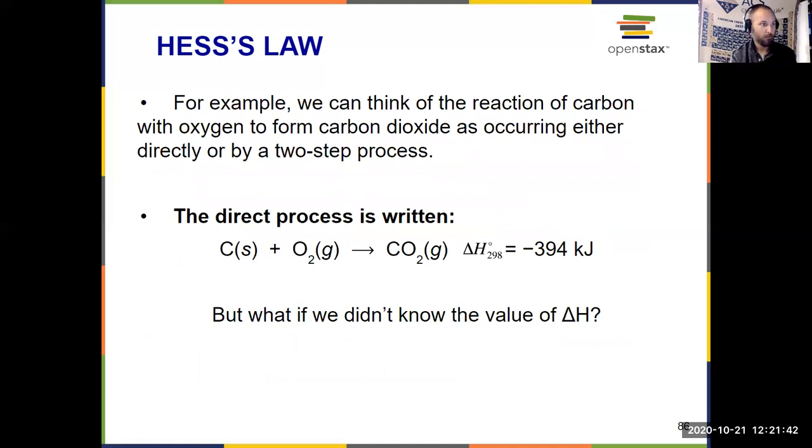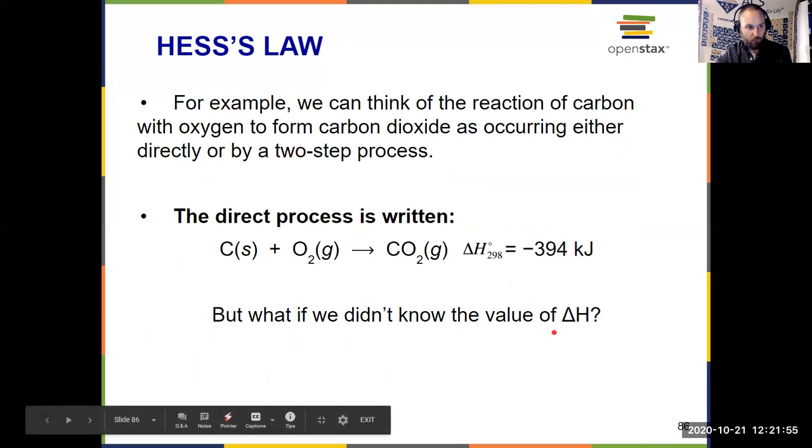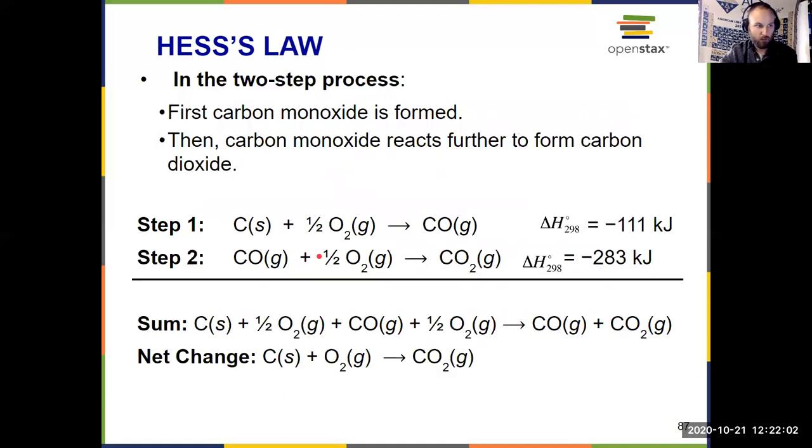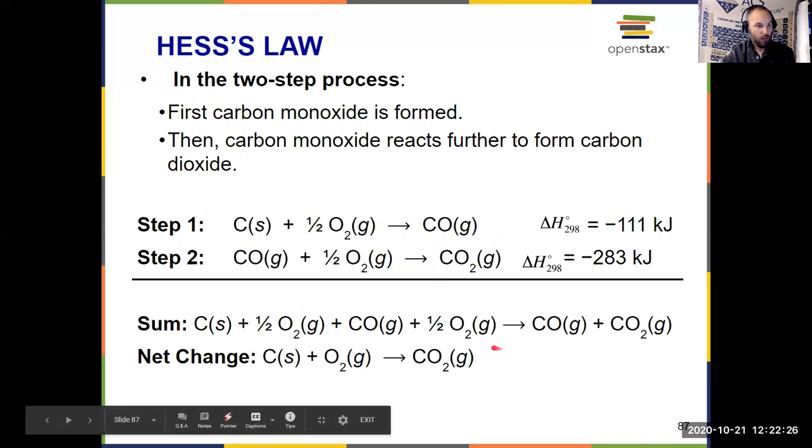To illustrate that, we can think about carbon and oxygen coming together to form CO2, which has a delta H value of negative 394 kilojoules of exothermic. But the question is, what if I didn't know what delta H was? Well, C coming together with diatomic oxygen, O2, is not the only way to form CO2. I could think about first forming carbon monoxide, right? C and half an O2, so a single O, forming carbon monoxide, and then that picking up another single oxygen to form CO2. And if you add all of those reactants and products together and simplify it, just like you would a net ionic equation from chapter four, you end up with the same net change that we saw from the previous slide. C plus O2 going to CO2.